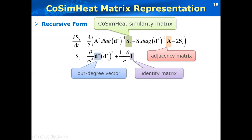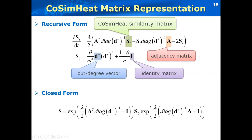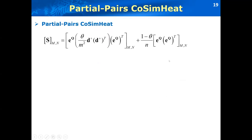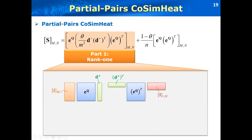We have proved that the above recursive form has the following closed form solution, S, which is an exponential matrix function times the initial matrix function times the initial temperature times the exponential function. And when we substitute the initial temperature into this closed form, we can split this closed form into two parts for partial pairs computation.